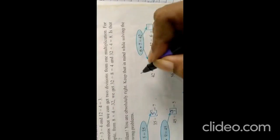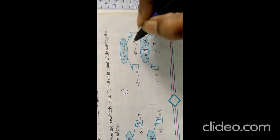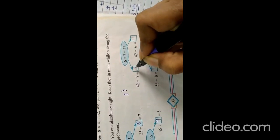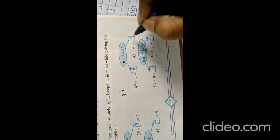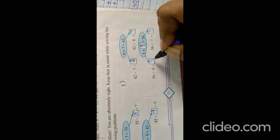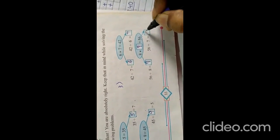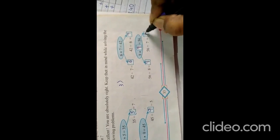The third sum: 6 times 7 is 42, so 42 divided by 7 is equal to 6, and 42 divided by 6 is equal to 7. Also, 56 divided by 8 is equal to 7, and 56 divided by 7 is equal to 8. You have to write this question also in your exercise book.